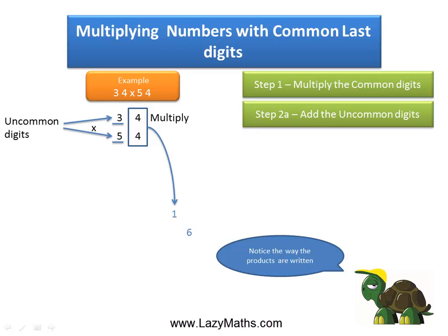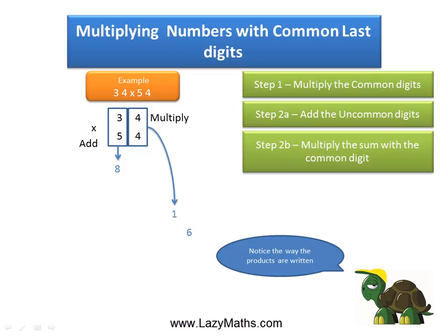The next step is to add the uncommon digits. We add 3 and 5 together — 3 plus 5 is 8. Then we multiply 8 with the common digit 4. 8 times 4 is 32. We write 32 also in the carryover format; this helps us do the addition quickly. 3 is written in the 10s place in the carryover position with 2 in the 1s place.